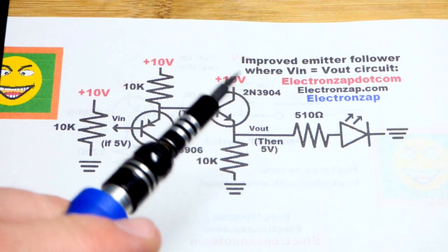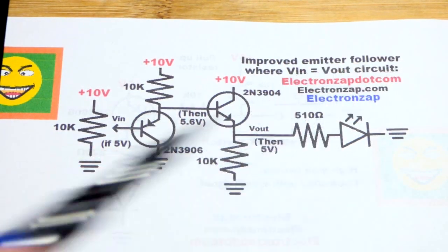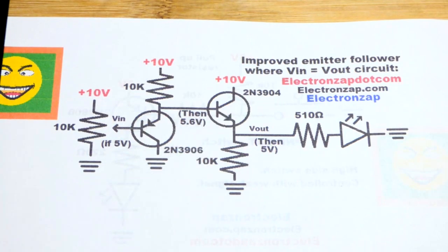So now in this video we're going to look at probably the last emitter follower circuit using bipolar junction transistors which have emitters, so an emitter follower would have to have them. You can also call them common collector.